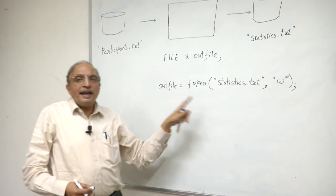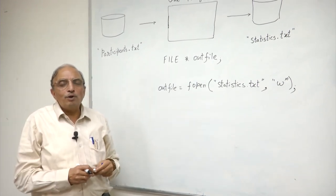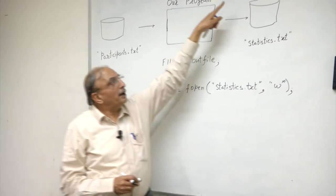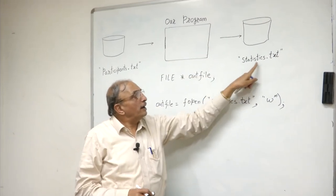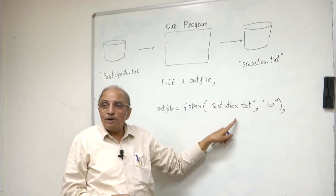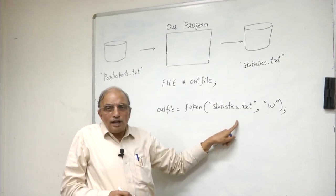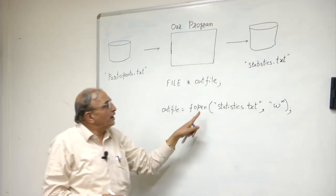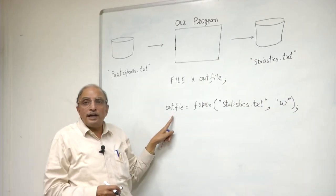When such an fopen statement is issued by your program, the program will, with the help of the operating system, try to create a file statistics.txt as per the name that you have given. Ordinarily you should succeed in creating such a file, in which case the program will return a valid pointer for outfile.